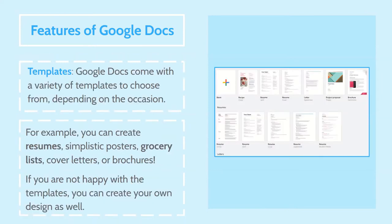Another feature of Google Docs is templates. Google Docs comes with a variety of templates to choose from depending on the occasion — for example, you can create resumes, simplistic posters, grocery lists, cover letters, or brochures. If you're not happy with a template, you can create your own design as well. When you go onto the Google Docs website, you'll see a screen with different templates such as a resume, a recipe, and a project proposal. You would open that template and swap out the words for what you want — it formats your document the way the template designs it, making it easier to construct a certain type of document.